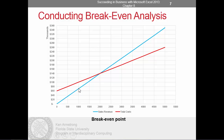Above the break-even point is where you want to be — it shows the amount of your profit. If we sell around 2,500 units, our revenue is about $175,000 and our costs are around $160,000, so at that point we'll make about $15,000 in profit.